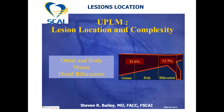A majority of left main coronary artery stenoses are localized in the distal part of the vessel — about 75%. Isolated mid left main coronary artery stenosis is a relatively rare pathology and is as a rule part of aorto-ostial or bifurcation left main coronary artery disease. Prevalence of aorto-ostial localization of stenosis is about 25%.